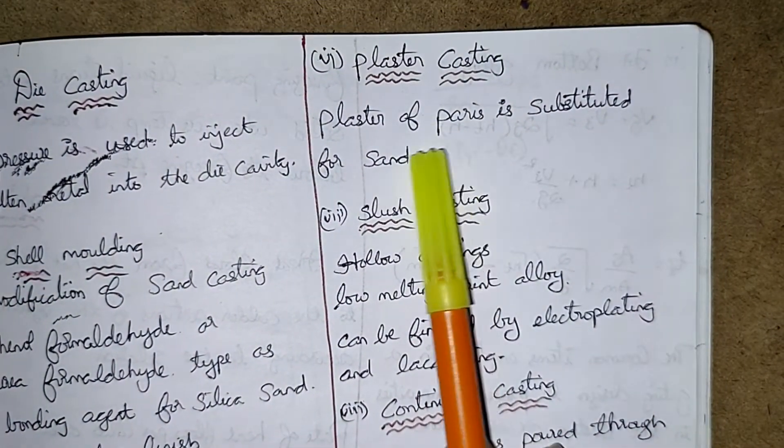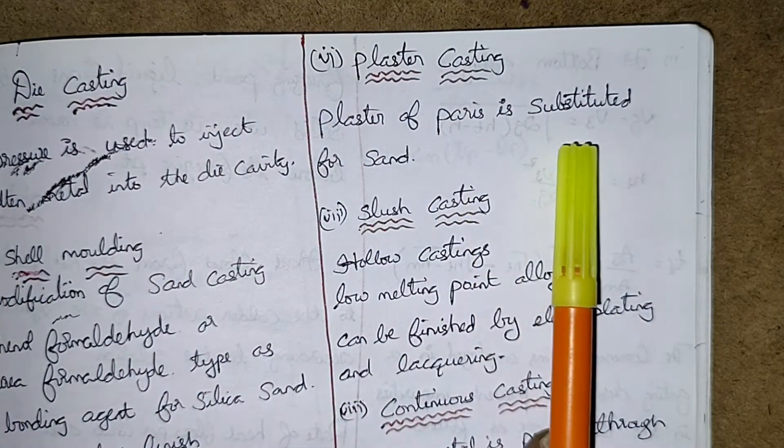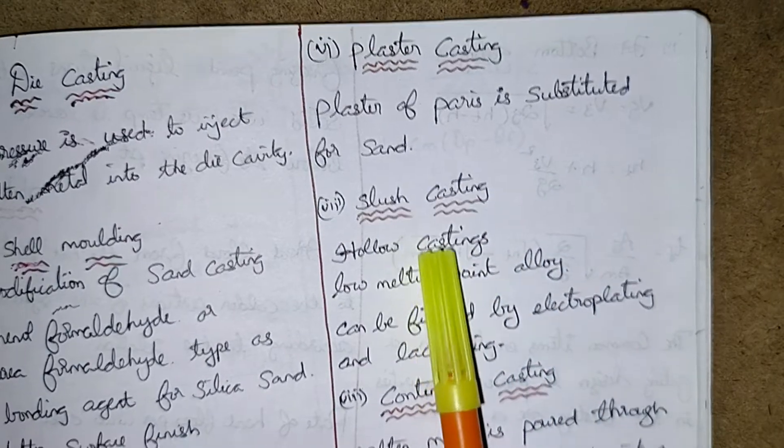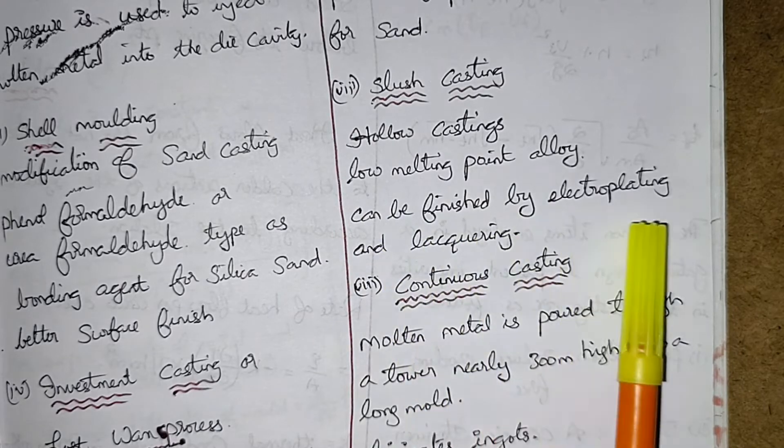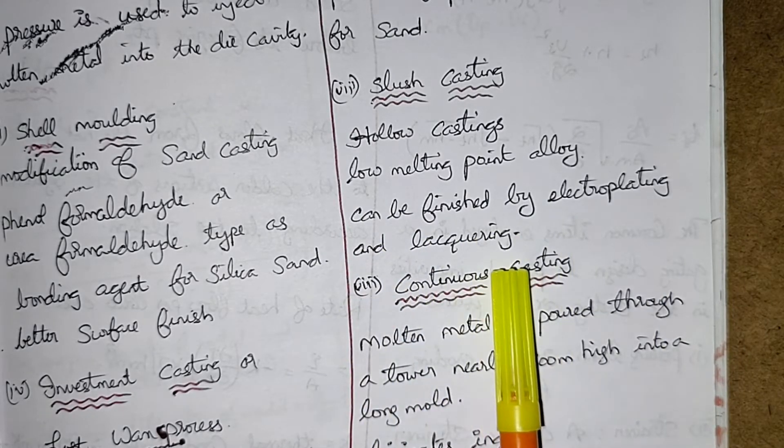Now plaster casting - plaster of paris is substituted for sand. Slush casting - hollow castings, low melting point alloy. Can be finished by electroplating and lacquering.